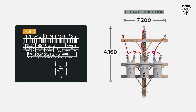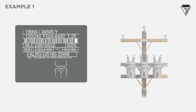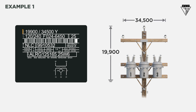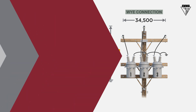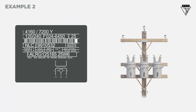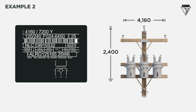Let's practice a few connections. For our first example, the primary coil voltage rating on the nameplate is 19,900 volts, which matches the phase-to-neutral voltage, so these transformers should be connected Y. In the second example, the primary coil voltage rating on the nameplate reads 4160 volts, which matches the system voltage, so these transformers should be connected delta.